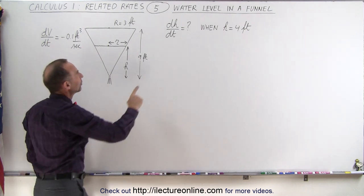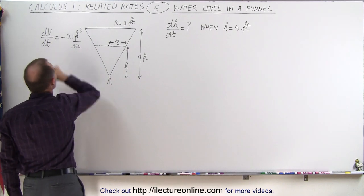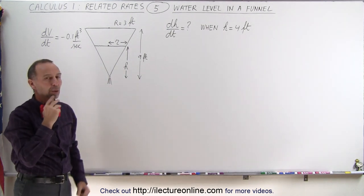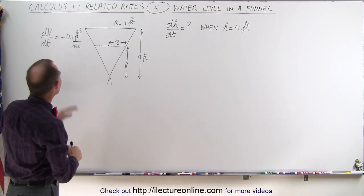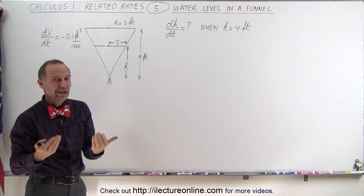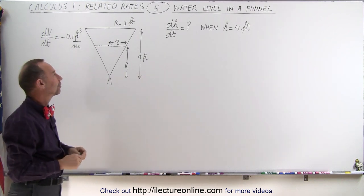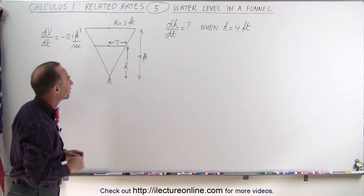So how do we find the rate at which the water level changes if we're given the change in the volume per unit of time? We need to find an equation that relates the volume to the height of the water level and then we'll take the derivative to find the rates. So let's come up with the equation for the volume of a cone or a funnel like this.